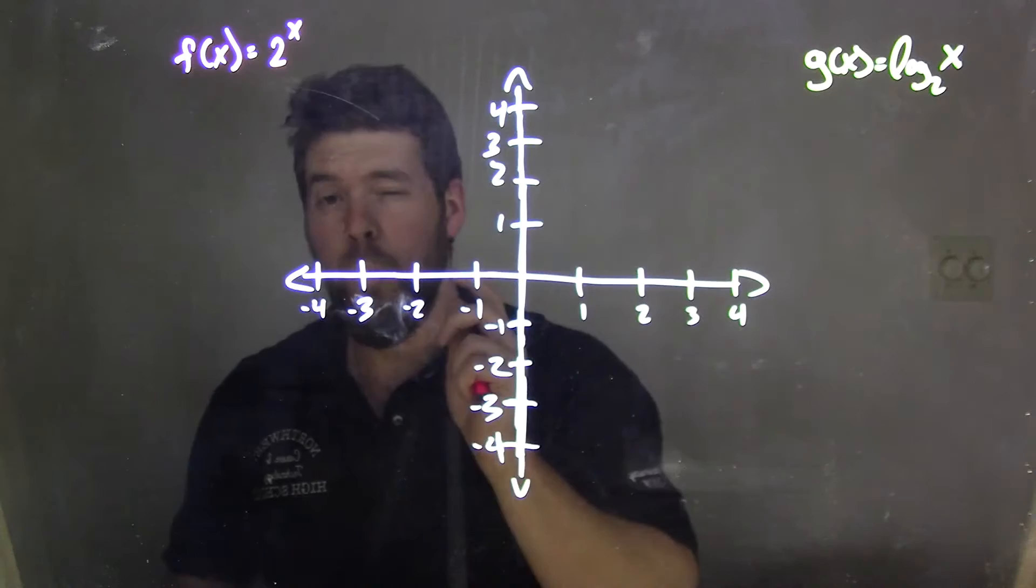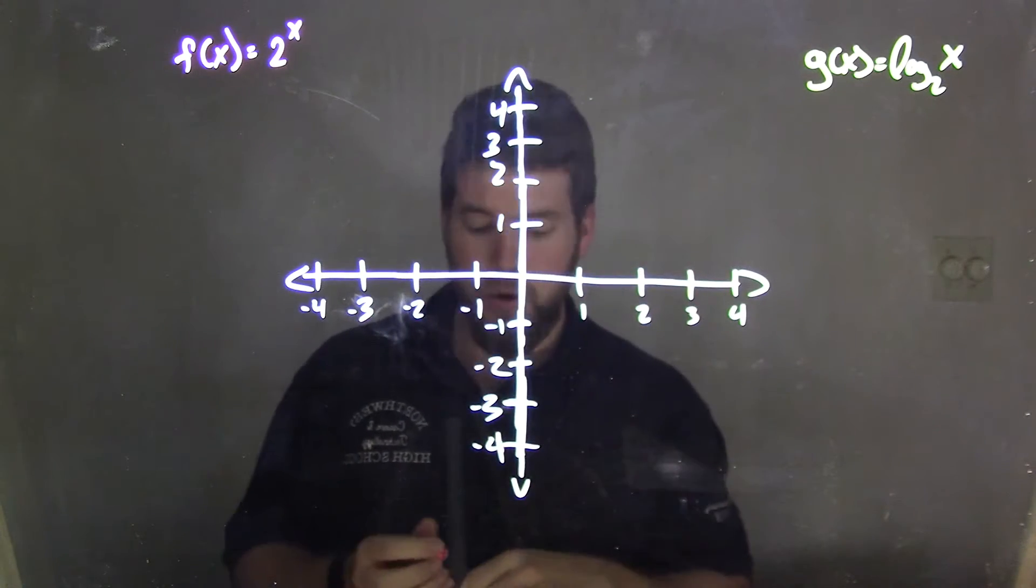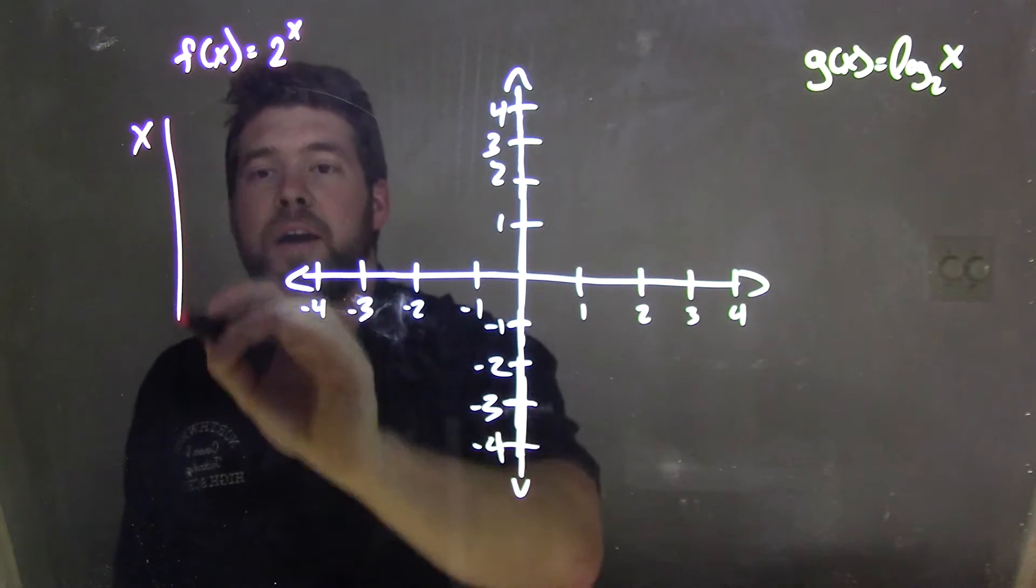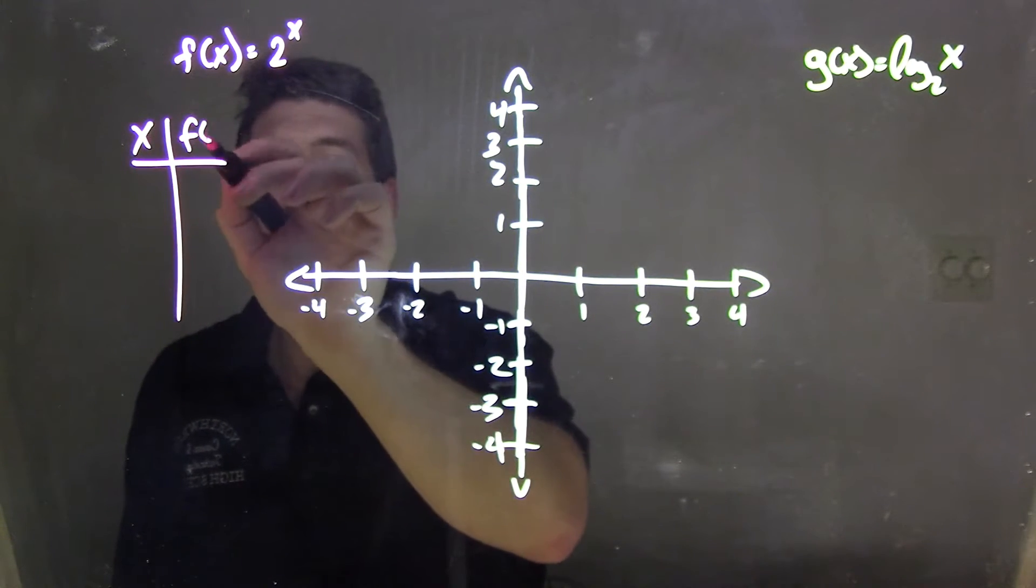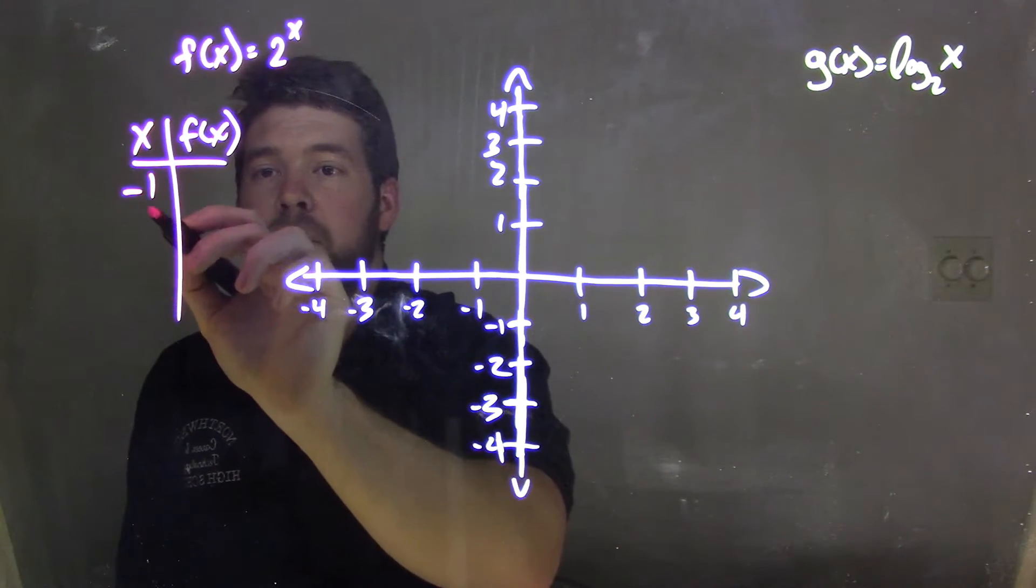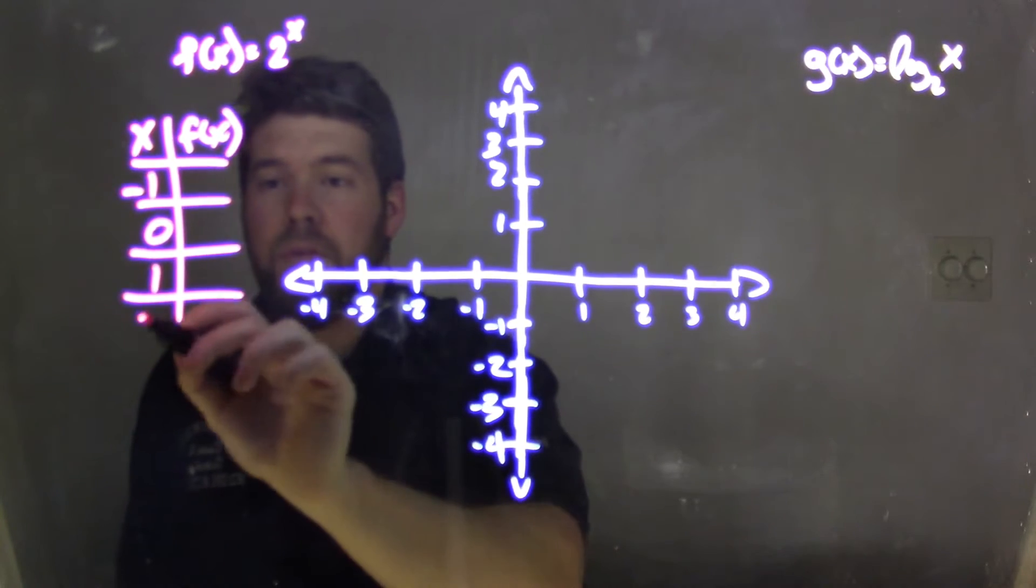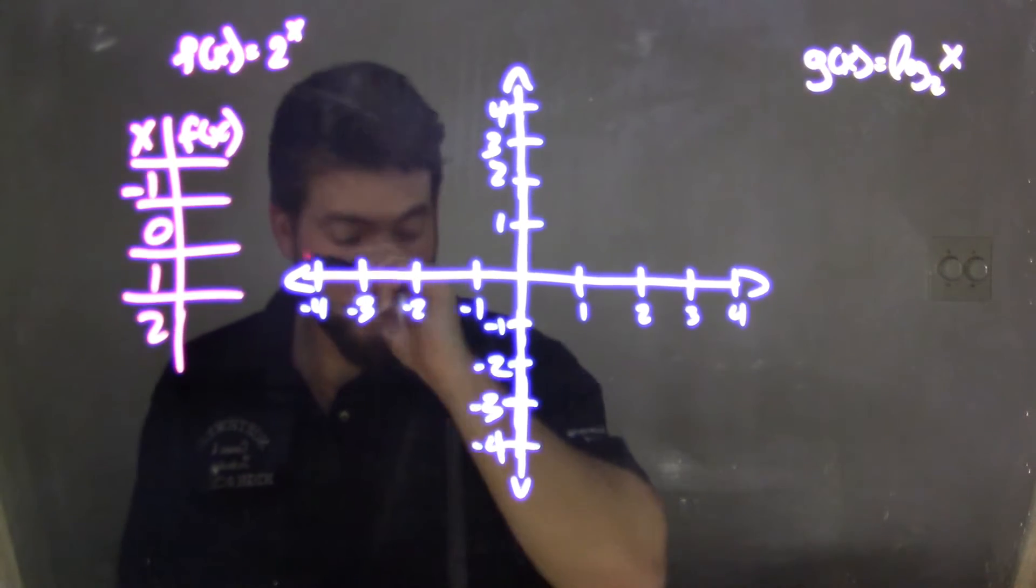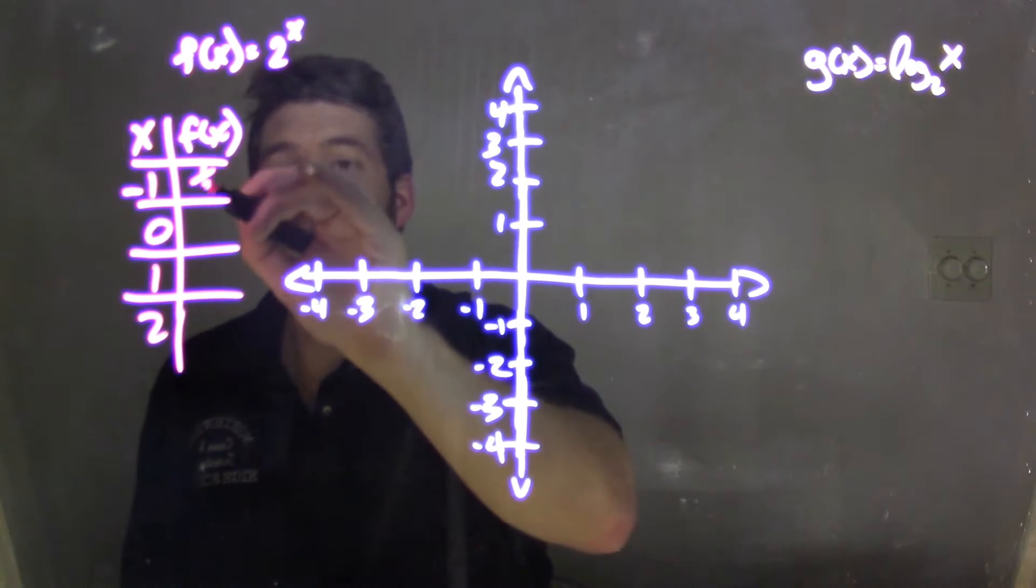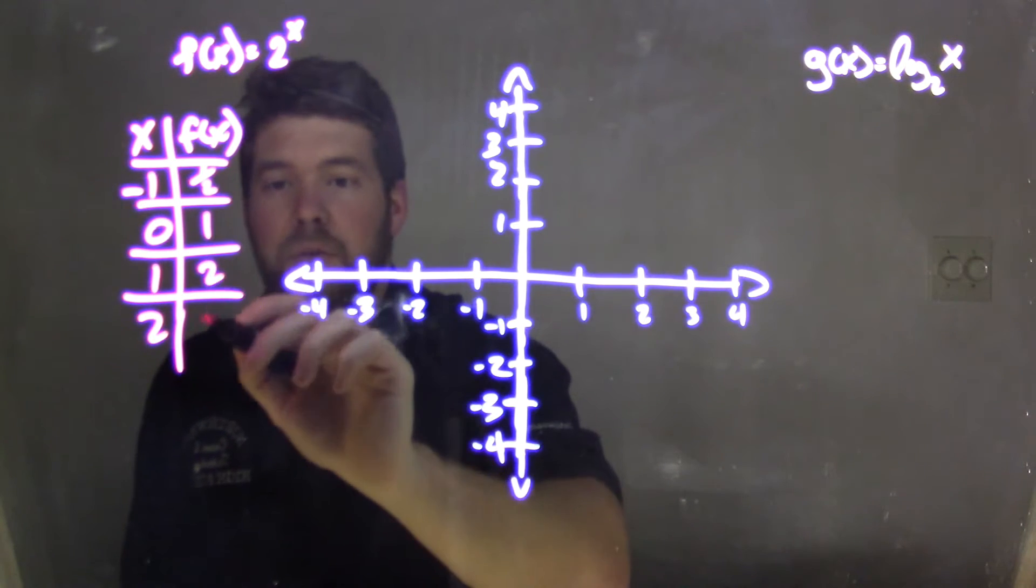So we've already made a video here graphing each one of these functions, so we'll go quickly through this. If we make a little table here, we can see our values of f(x) and g(x). So if x is -1, 0, 1, and 2 are four values we're going to be using. -1 is 1/2, 0 is 1, 1 is 2, and 2 is 4.